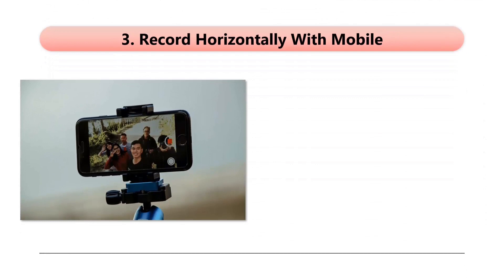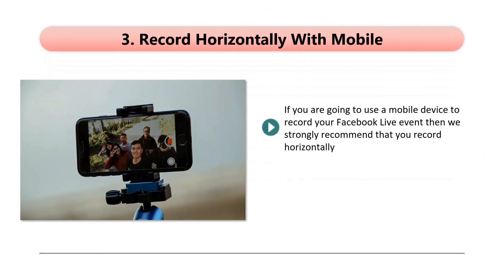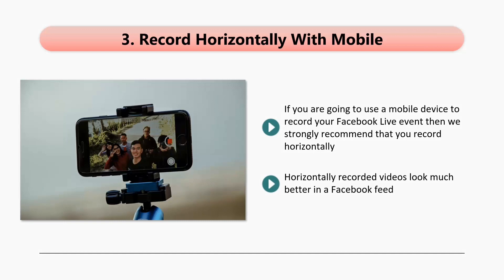Three: record horizontally with mobile. If you are going to use a mobile device to record your Facebook Live event, we strongly recommend that you record horizontally. Vertically recorded videos just don't look good. Horizontally recorded videos look much better in a Facebook feed. You can also add a nice filter and use other tools to enhance video quality. If you have the option of using a desktop or laptop with a high-quality webcam and microphone instead of a mobile device, we will always recommend that you do this.